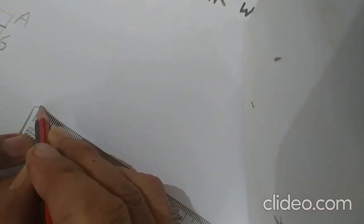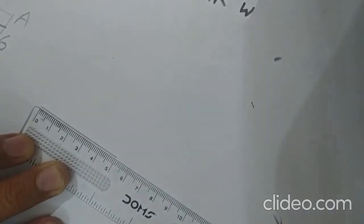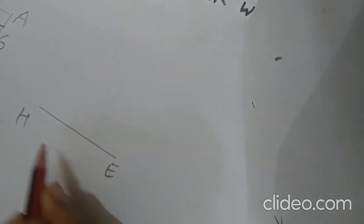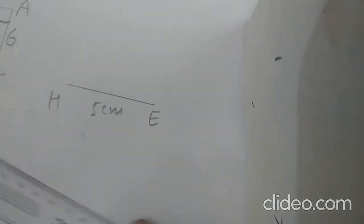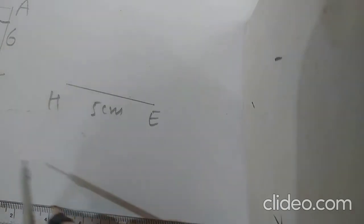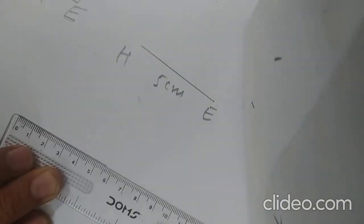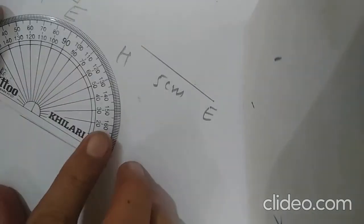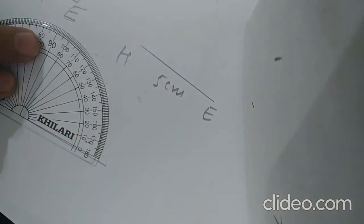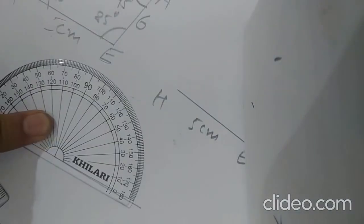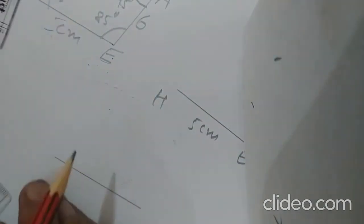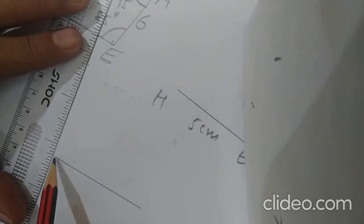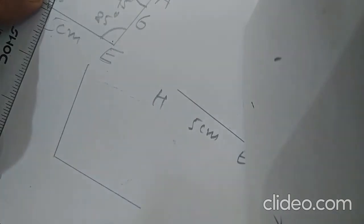I need to draw HE as 5 centimeters. At point H, I need to construct a 95° angle. To draw 95°, I first draw 90° using the compass — this is 90° — and then extend it slightly to mark 95°.